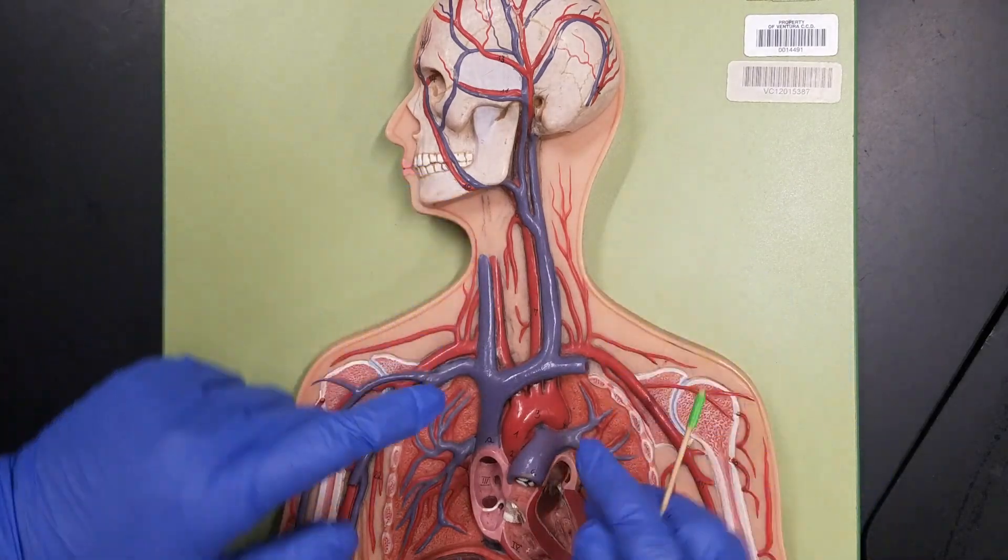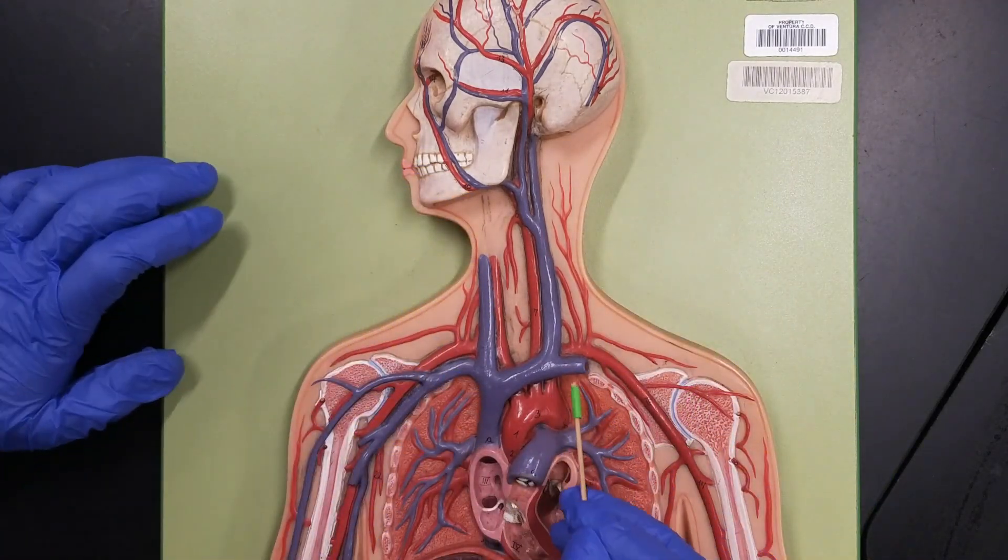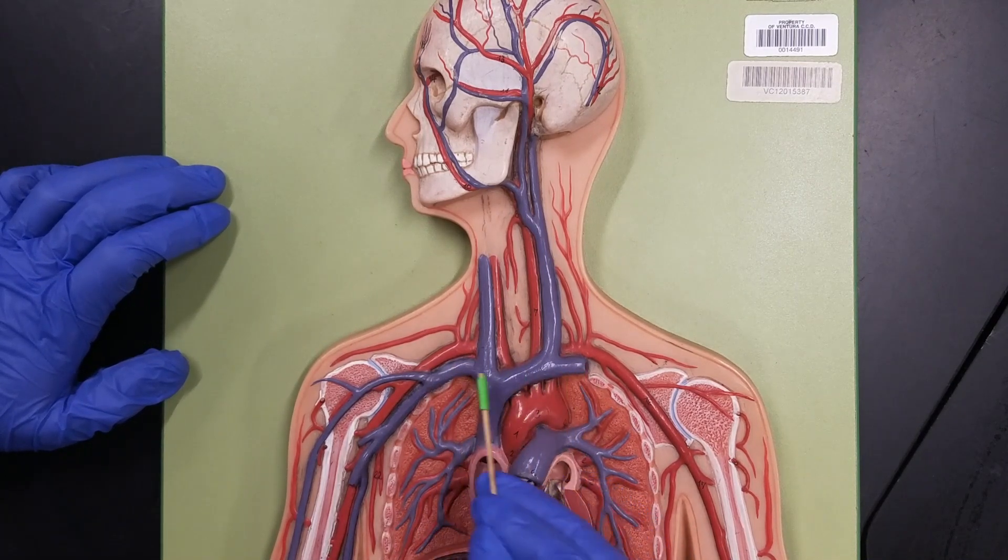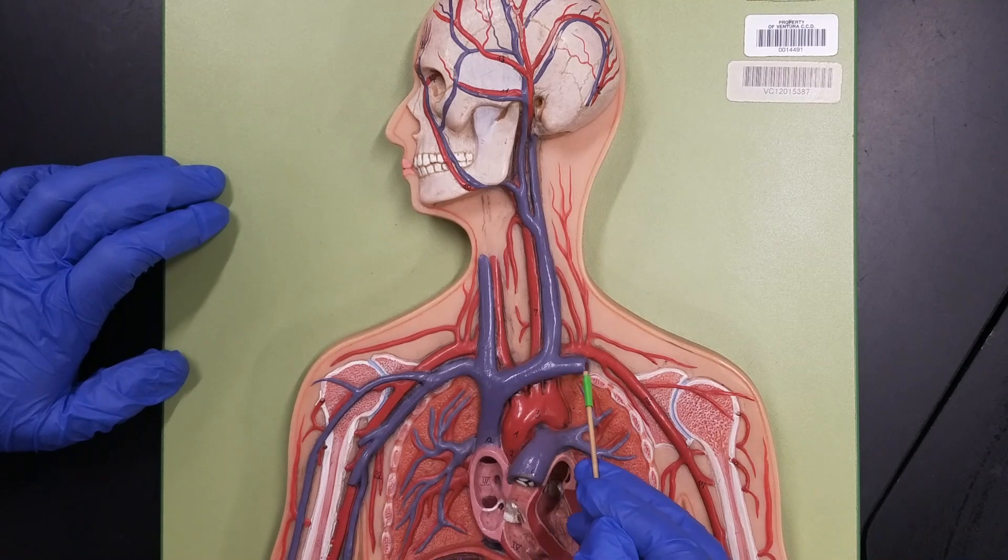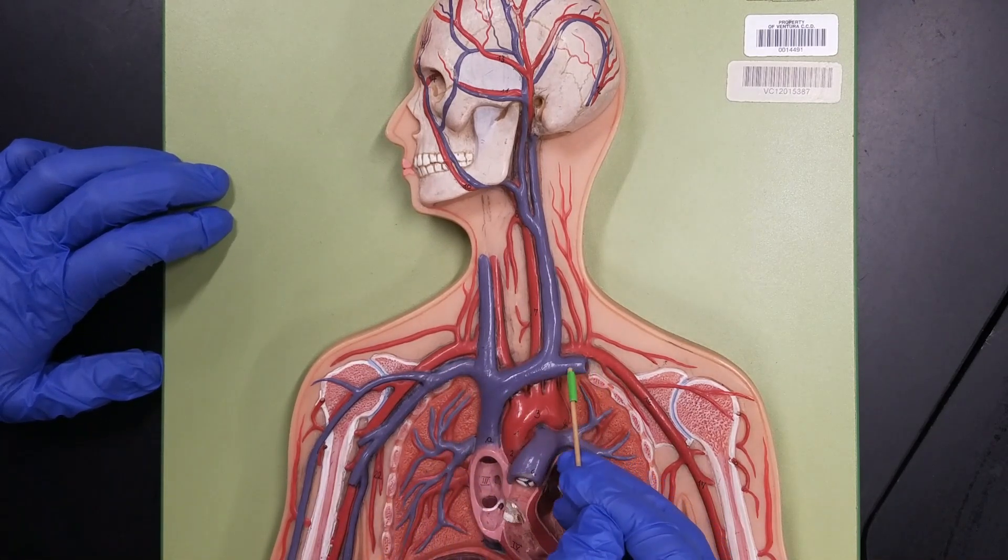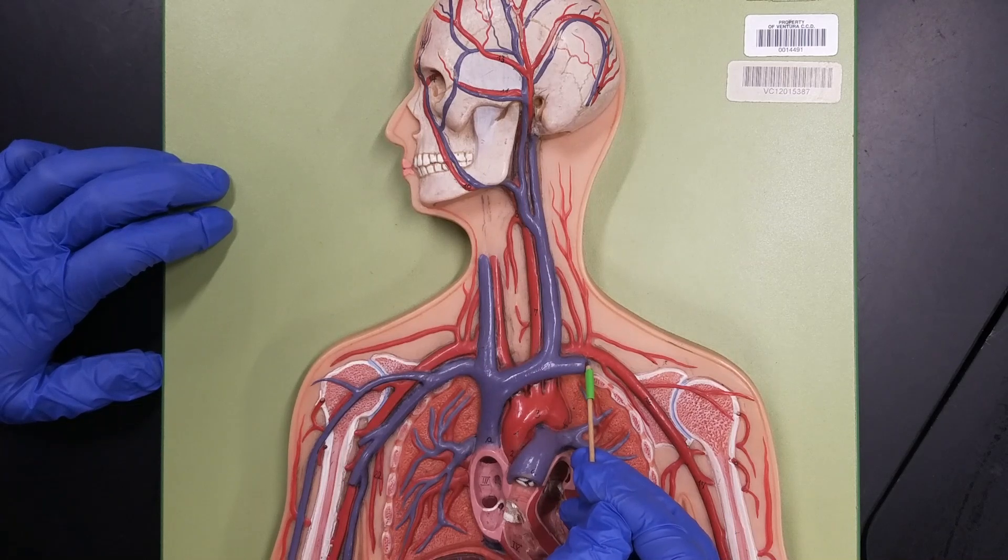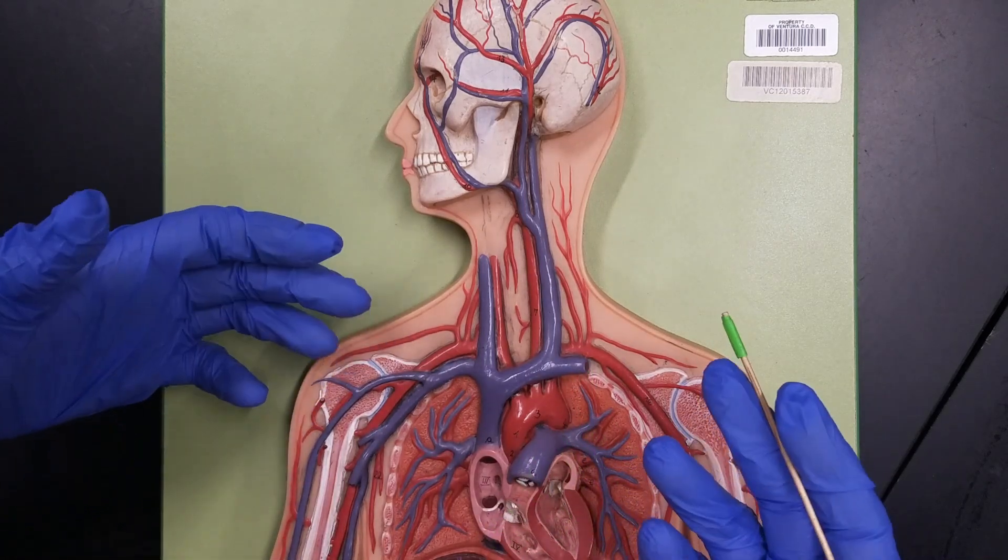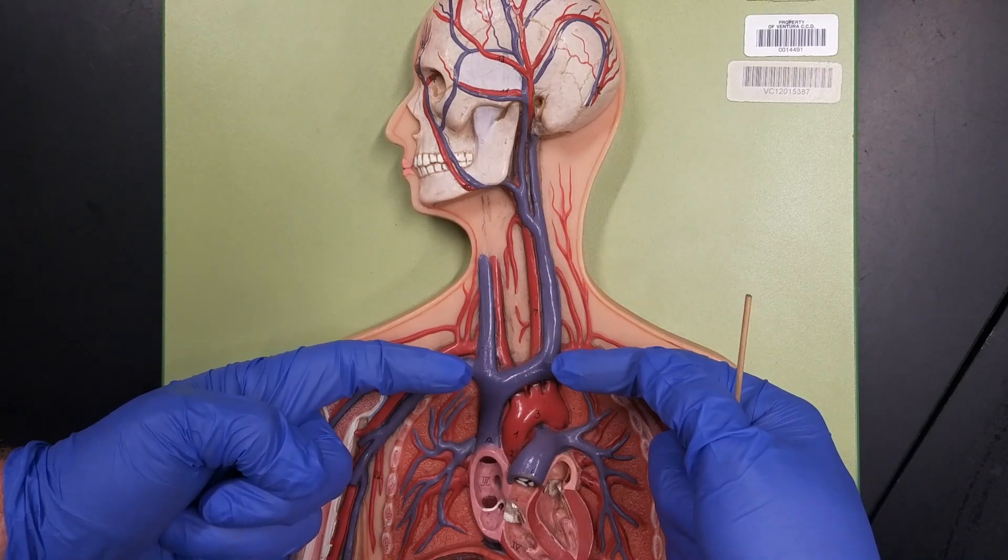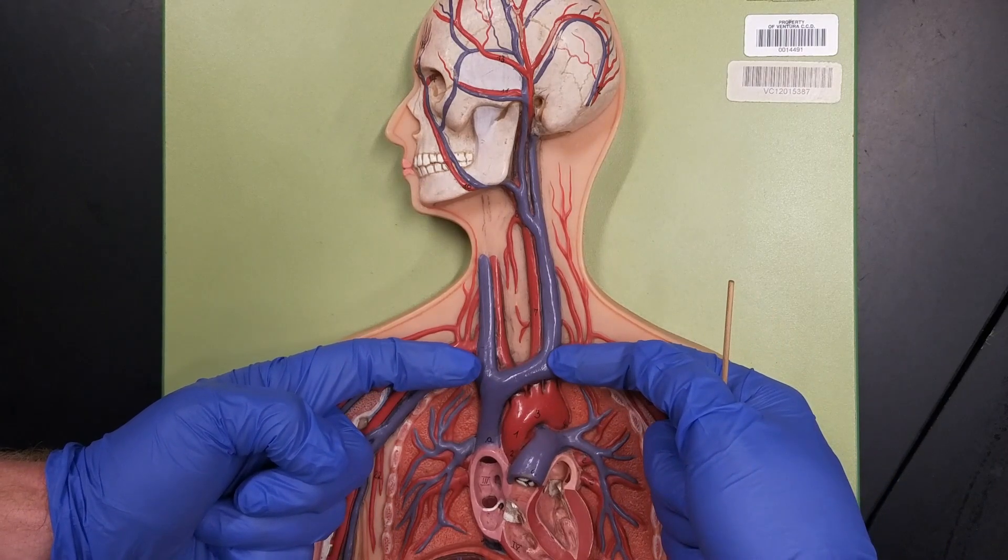As we come down, we can see our next two veins, these two here, one and two. These veins are the subclavian veins. We have a right subclavian vein and a left subclavian vein. Sub means below. Clavian refers to the clavicle, so these veins are the veins that sit below the clavicles.